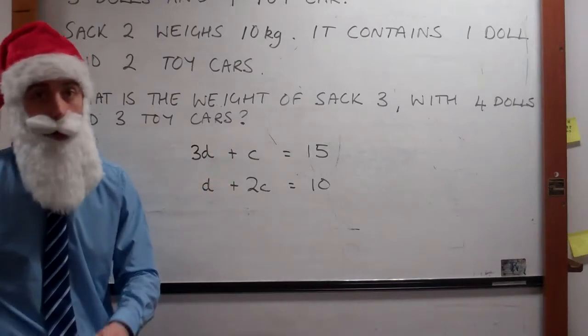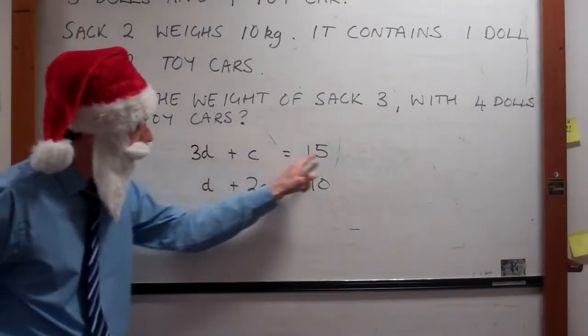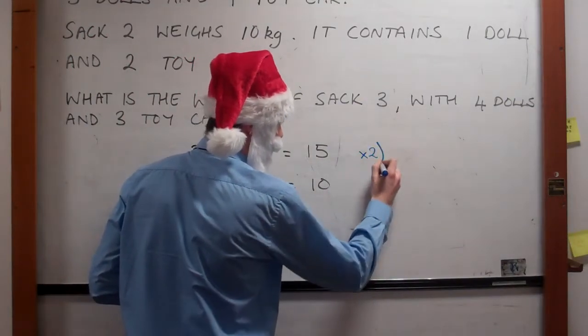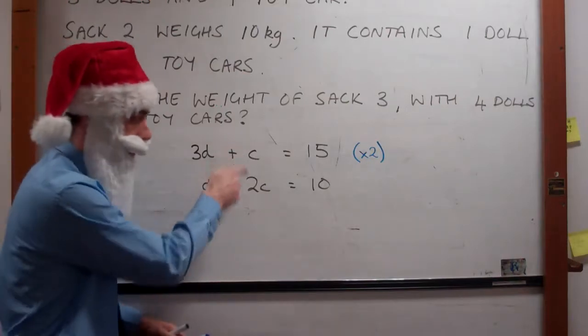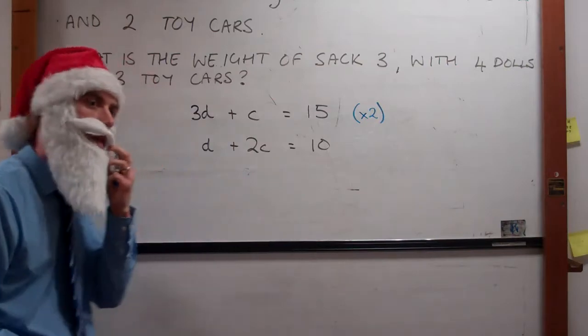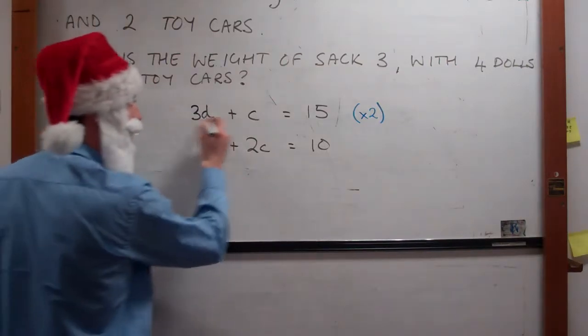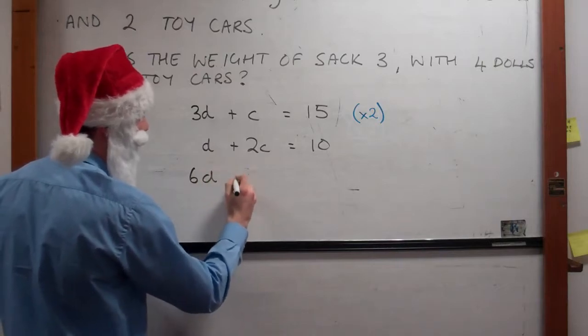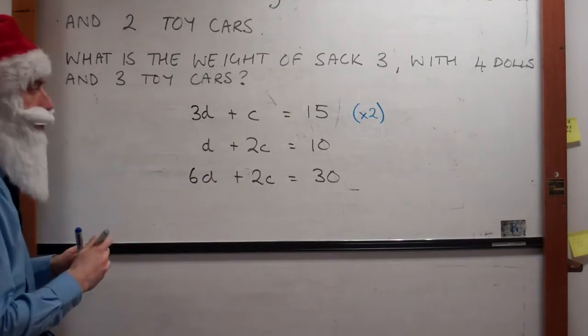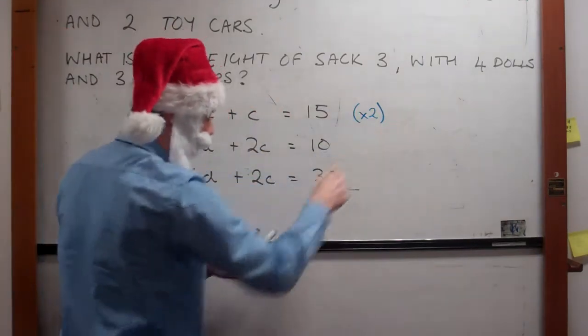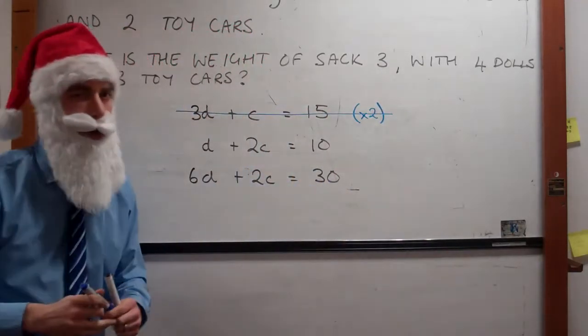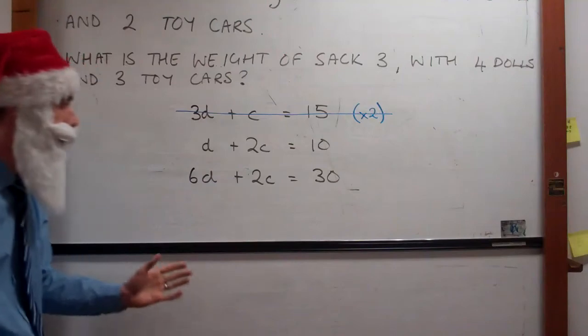We're going to use our elimination method, but first of all we have to multiply our top equation by two. Why? Well it's so that our coefficients of our second term can be the same so that they can be eliminated. This equation is going to look like 6D plus 2C equals 30. So 15 times 2 is 30, so we multiply all the way through. We're going to score through this equation, that's just a little technique so we don't have too many equations on the page confusing everything.